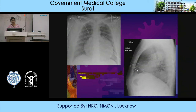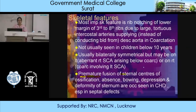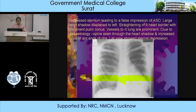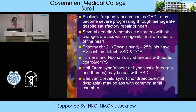Most important skeletal feature is rib notching of the lower margin of the 3rd to 8th ribs due to large tortuous intercostal arteries supplying the descending aorta in coarctation. Premature fusion of sternal ossification centers, absence, bowing, depression, and deformity are all seen in CHD, especially in septal defects. A depressed sternum can give a false impression of ASD because of the left heart shadow displaced to the left side — the clue to the etiology is the spine seen through the heart shadow, as normally the lower part of the spine is not visualized on a frontal chest view. Scoliosis frequently accompanies CHD.